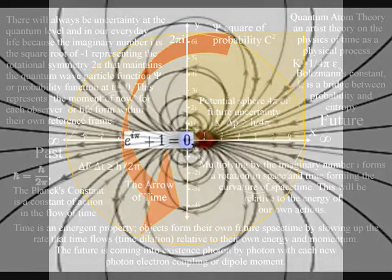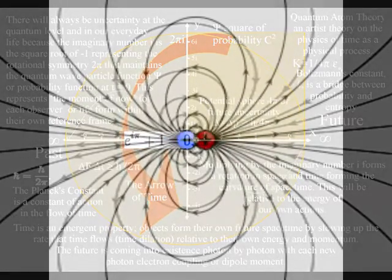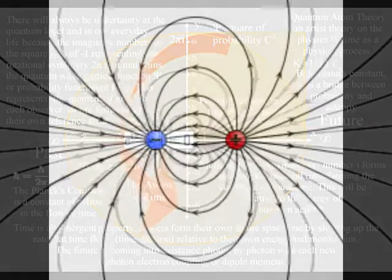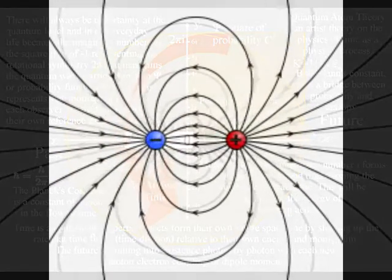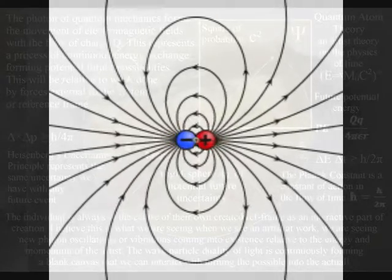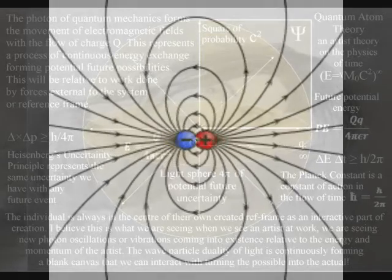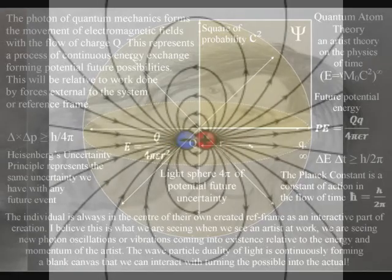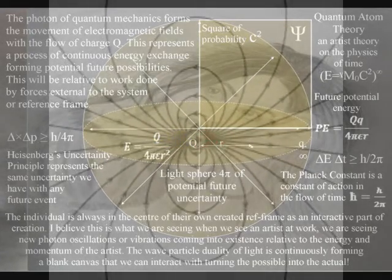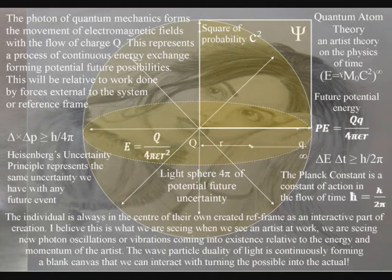This is a process of continuous energy exchange — what I call continuous creation — formed by the spontaneous absorption and emission of light waves. In this theory, the imaginary numbers are at right angles to the standard number line because electric fields are always at right angles to magnetic fields, in a process of permanent flux forming the continuously changing world of our everyday life. The light photon of quantum mechanics is the carrier of the electromagnetic force, forming the movement of positive and negative charge with the flow of electromagnetic fields.